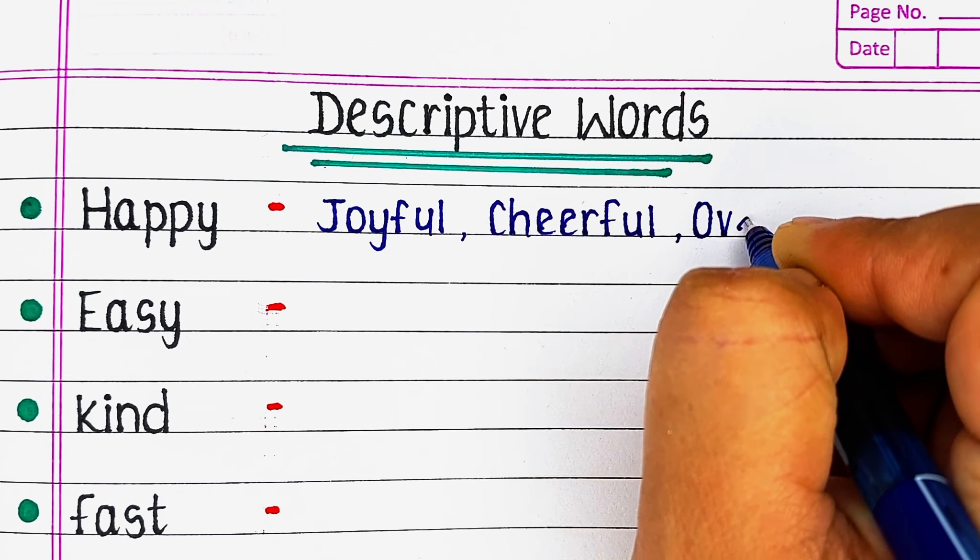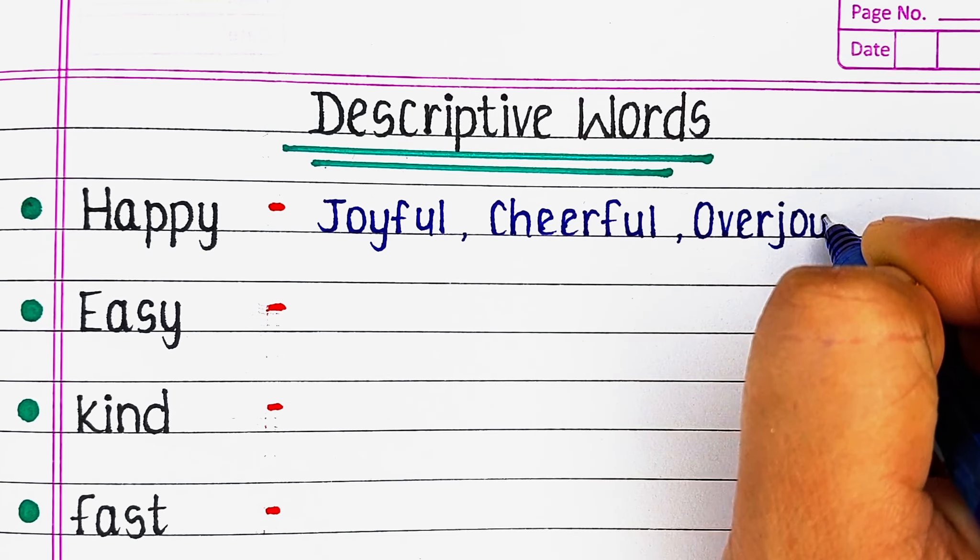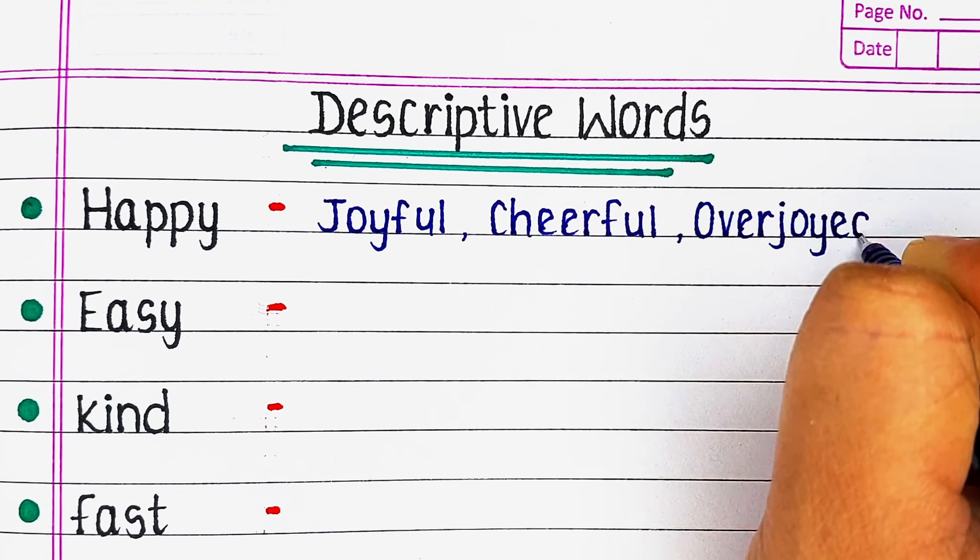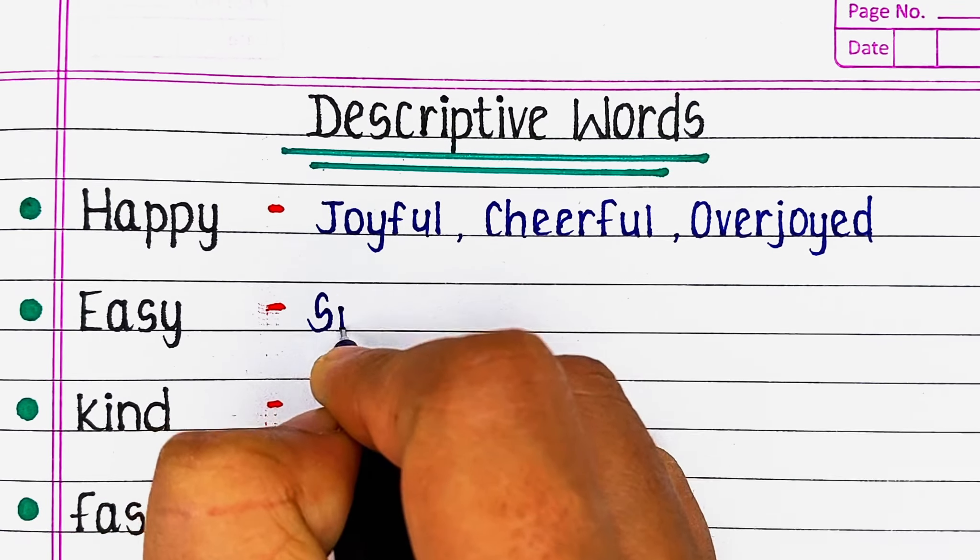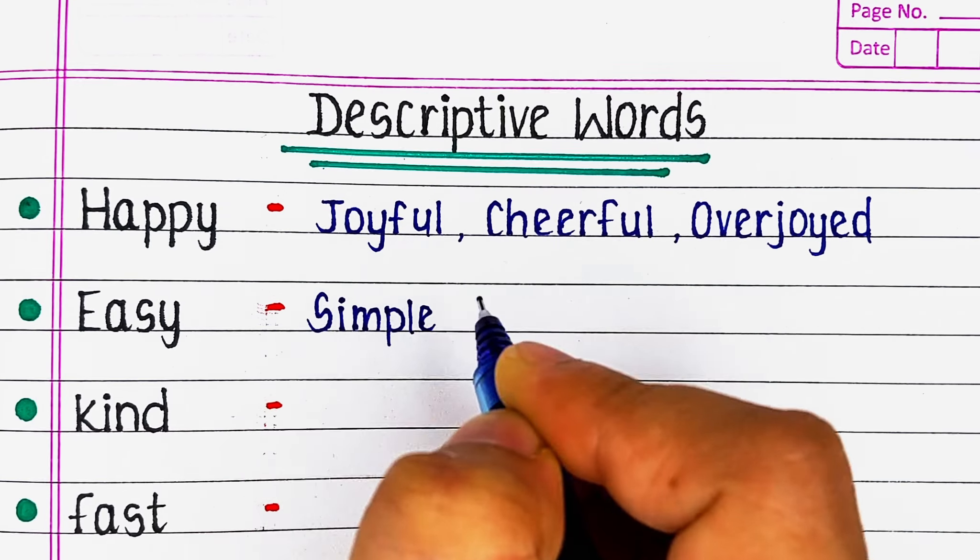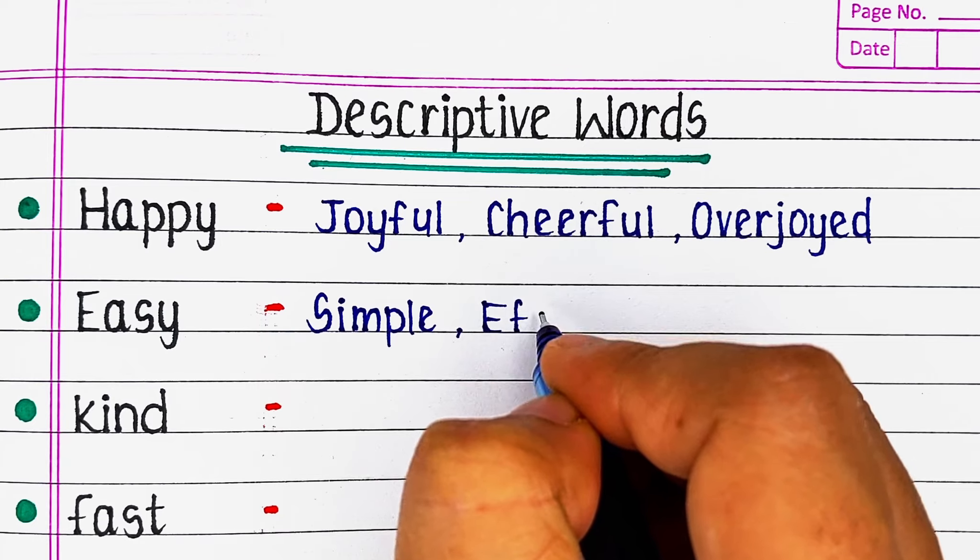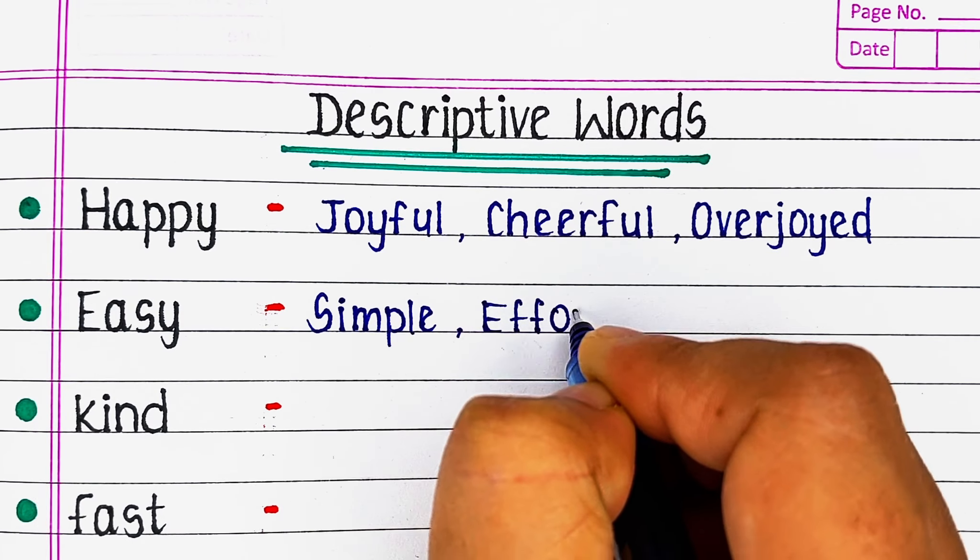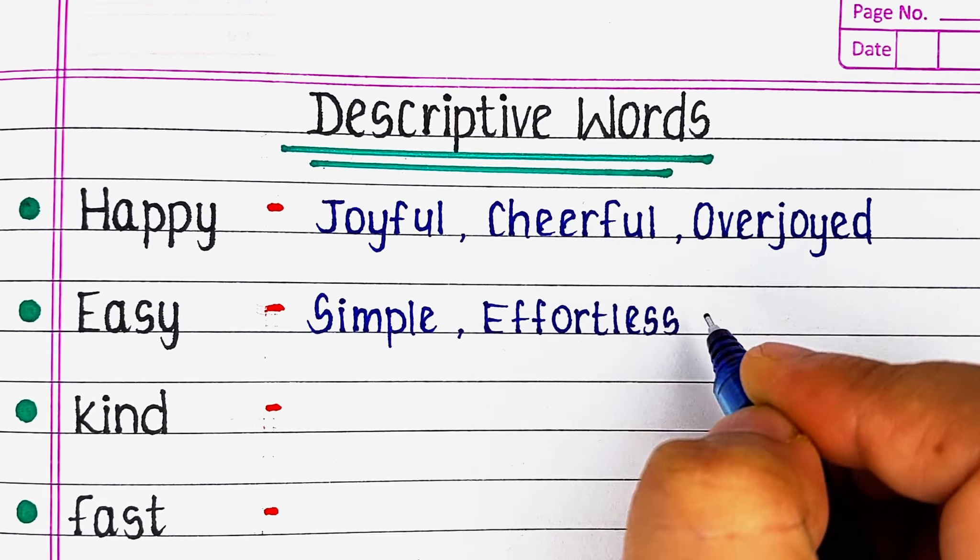First one is Happy. Its similar meaning words are Joyful, Cheerful and Overjoyed. Next word is Easy. Its synonyms are Simple, Effortless and Smooth.